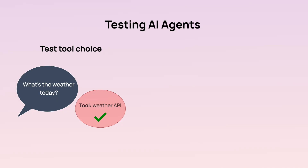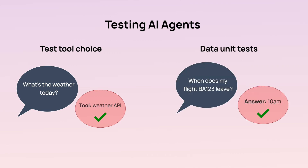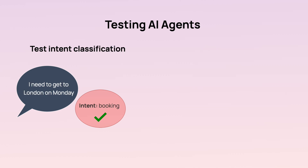When dealing with AI agents, you can also break things down into smaller testable components. For example, testing correct tool choice: you check if the agent chooses the right tool for a task — if you ask about the weather, it should use the weather API. You can design scenarios with known correct tools and verify the LLM picks them. You can also write data unit tests to check that the LLM correctly extracts details from user input, like returning the departure time for a specific flight number after querying the right API.